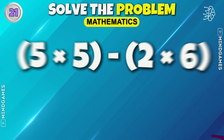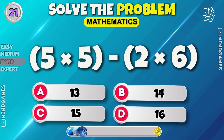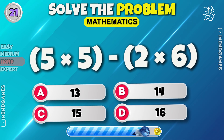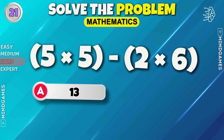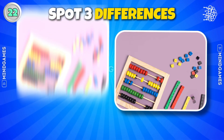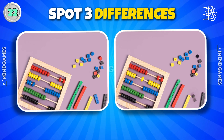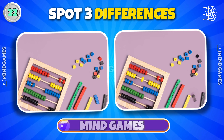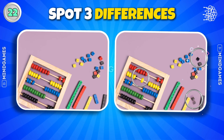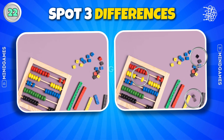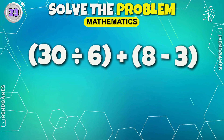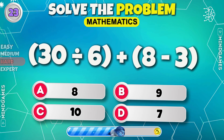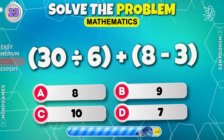Here comes the hard level. Can you solve this equation? The answer is 13. Can you spot three differences? 14. One, two, three — how many did you spot? Keep going. The answer is 10.